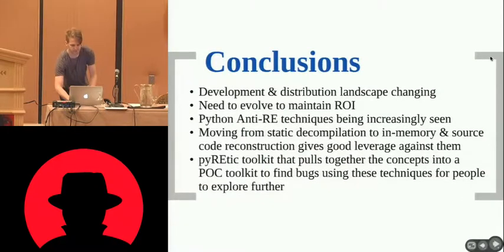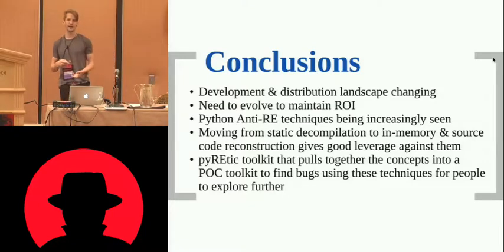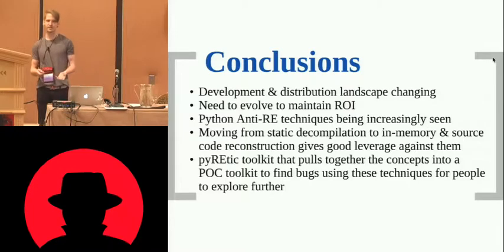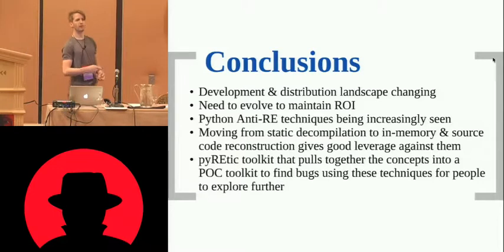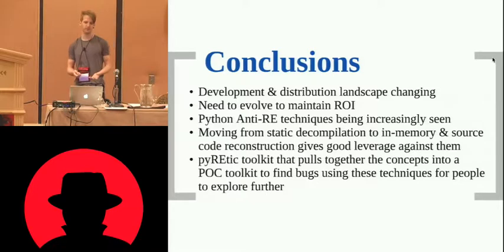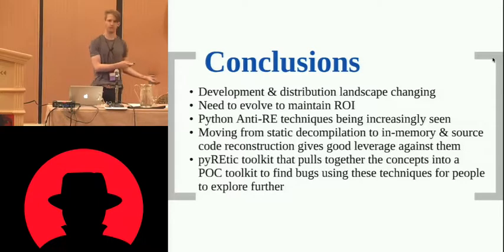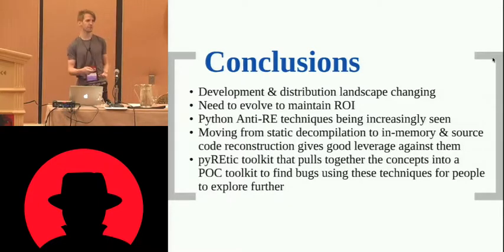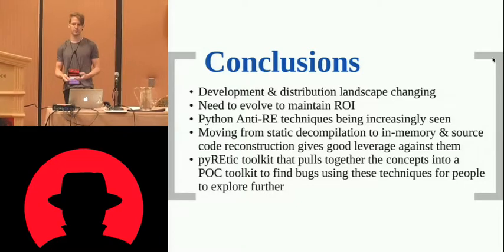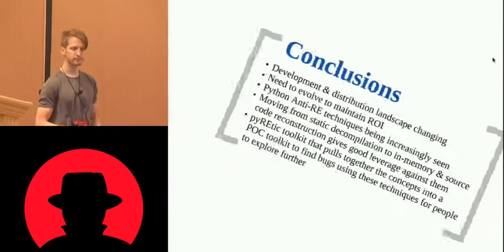Conclusions: the development and distribution landscape are changing. We need to evolve to make sure our reversing and bug-finding work maintains a decent ROI — we don't want to spend a year looking at something before getting a good bug. High-level languages give a very rapid return on investment because it's an area not many people have looked into. There are Python reverse engineering techniques. Going from static decompilation to in-memory gives good advantages that outweigh the drawbacks. Pyretic is a proof of concept for people to begin playing with in-memory decompilation.